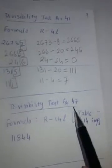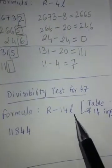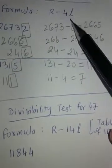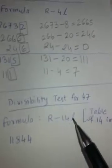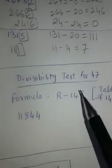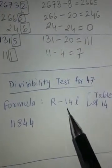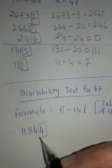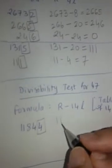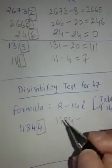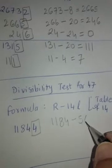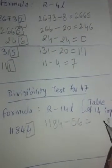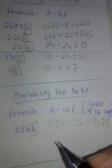Now for 47, test is R-14L. For 41 it was R-4L, for 47 it is R-14L. That means see again, by-hearting table is important. You must know table of 14. This is last digit, remaining number is 1184, 14 times 4 is 56, 1128.